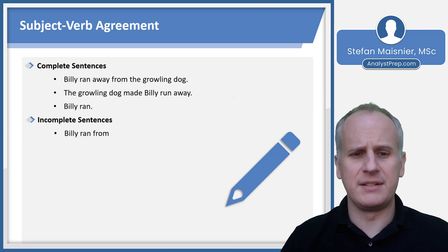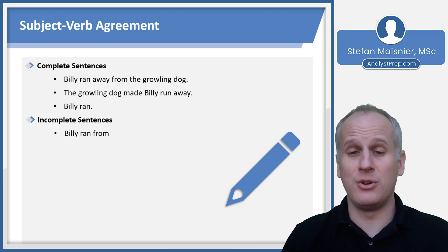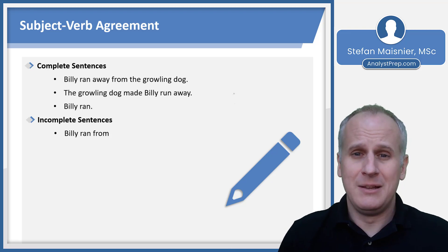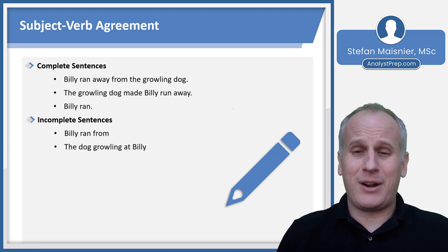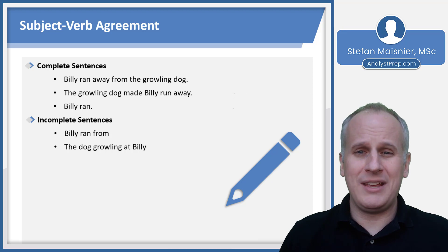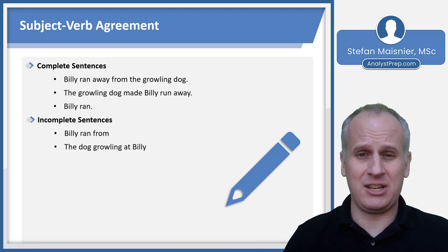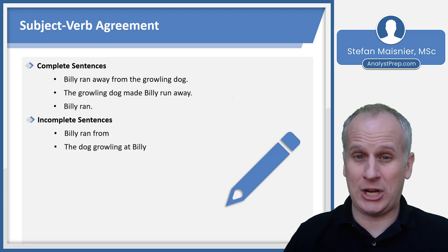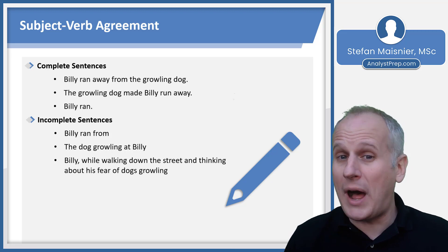Now let's look at incomplete sentences. 'Billy ran from' — if I add the word 'from,' I need an object for that preposition, and 'Billy ran from' leaves the question of what he ran from unanswered. A complete sentence needs to introduce no questions that need to be answered for the idea to be complete. 'The dog growling at Billy' just describes the dog — 'growling' describes the dog but doesn't say what the dog actually did. Similarly, 'Billy, while walking down the street and thinking about his fear of dogs growling' — just a bunch of descriptive phrases for Billy; we don't know what Billy actually did.